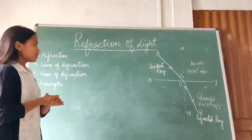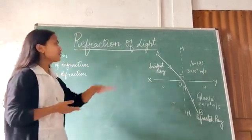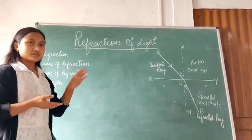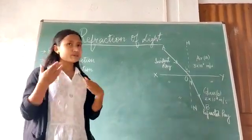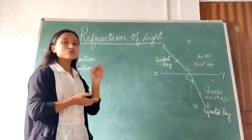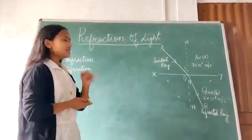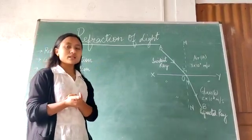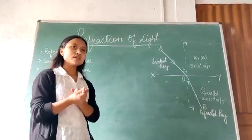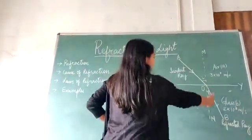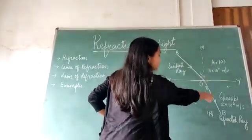So, now, experimentally, this person named Willebrord Snell, he is a Dutch scientist, he experimentally observed that there are two laws of refraction. Number one, it is that this incident ray, the normal at the point of incidence, and the refracted ray, they all lie in this same plane.